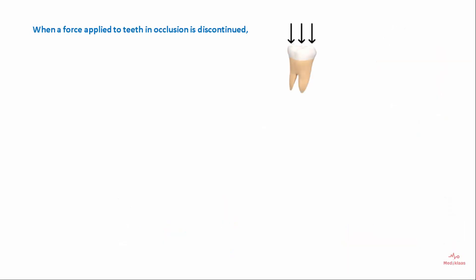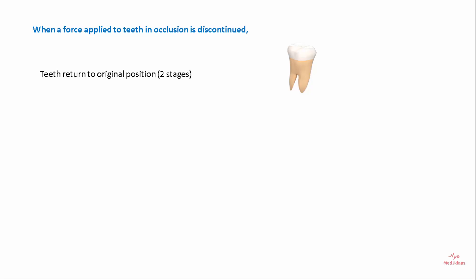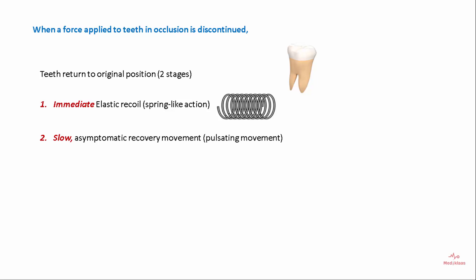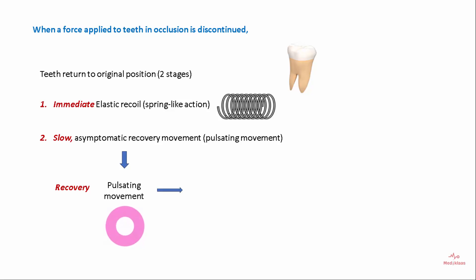When a force applied to the teeth in occlusion is discontinued, the tooth returns to its original position in two stages. The first is the immediate elastic recoil phase, which is a spring-like action. The second is a slow, asymptomatic recovery movement in the form of pulsation associated with normal pulsation of the periodontal vessels.